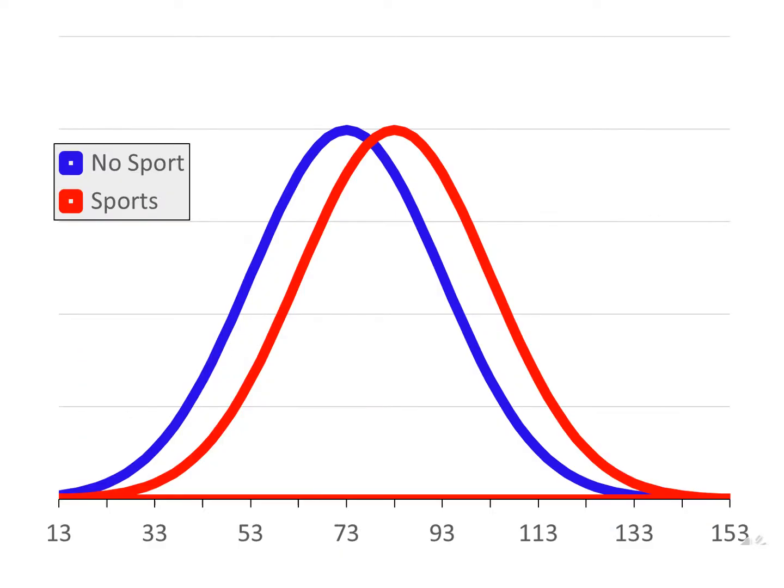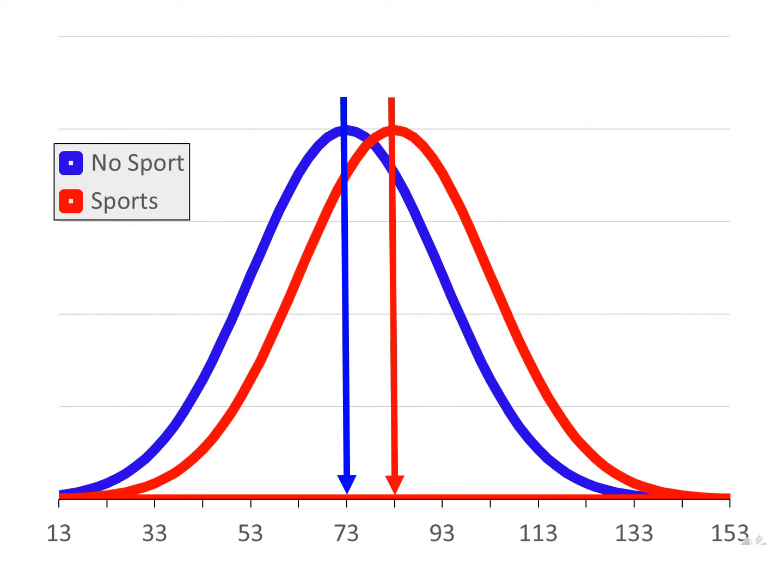People often stop there, but there's one more thing we can do to help us understand our effect size and the magnitude of our effect in more real-world terms. I've created a graph showing the distribution of scores for the two hypothetical populations that we've sampled. Self-confidence appears along the x-axis.